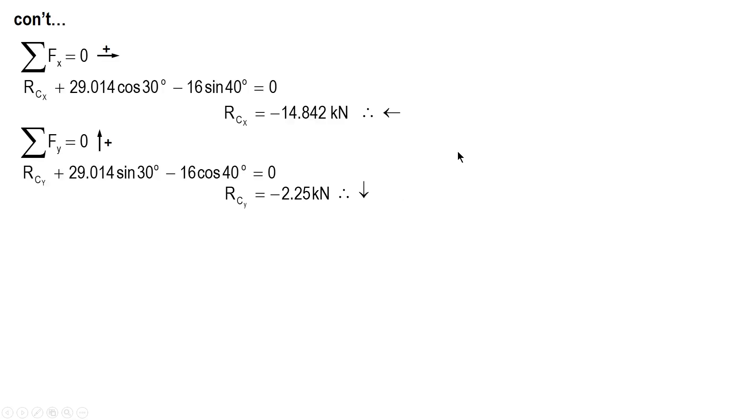Okay. So after this, we solve for the resultant. And the direction of RC is the third quadrant, since X component is to the left and RC, the Y component is downward. So construct a rectangle. The direction of the resultant is the third quadrant.